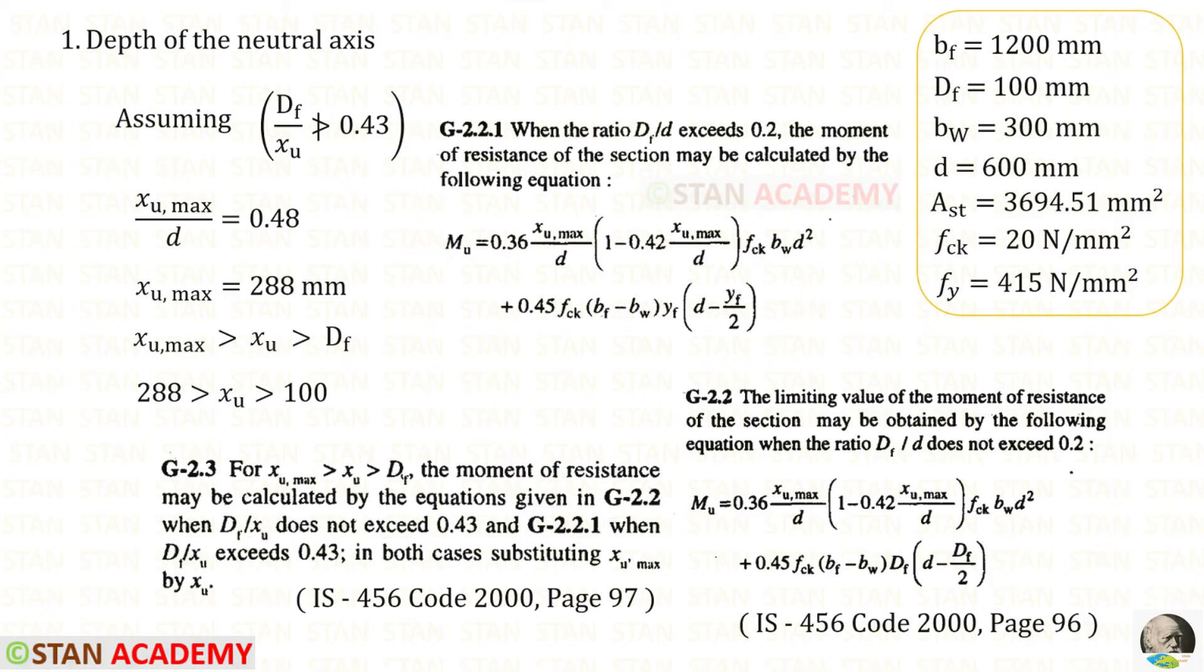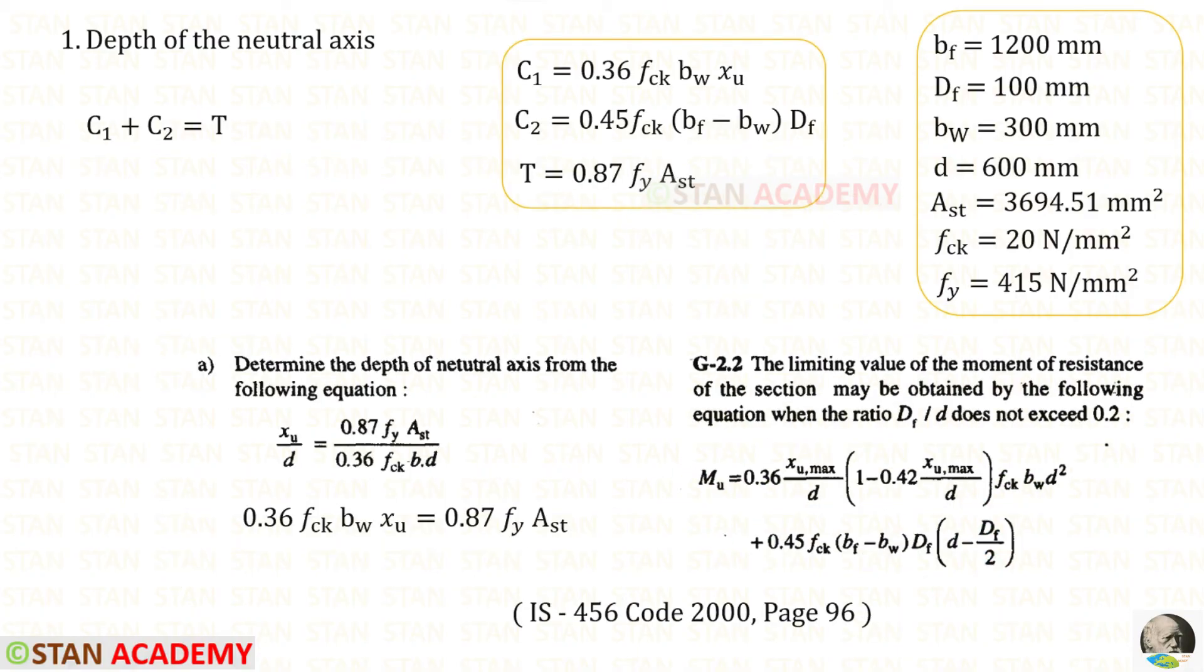Now as per our assumption we need to use this equation. Still we have not found the depth of the neutral axis. The summation of compressive forces will be equal to the tensile force: C1 + C2 = T. It is a little difficult to memorize C1, C2, and T. Let me show you a shortcut. From the equation we can arrange it like this, where instead of b we apply bw. This is C1 and this is T.